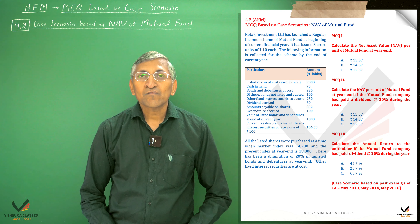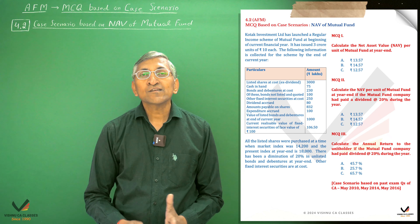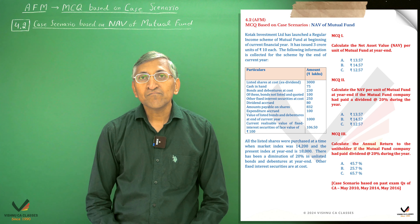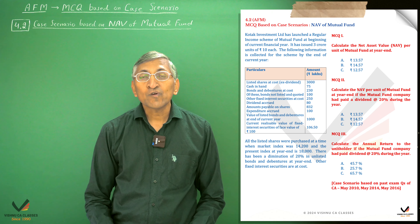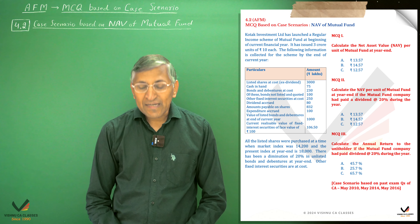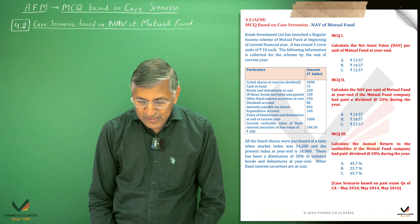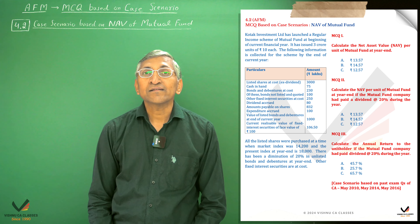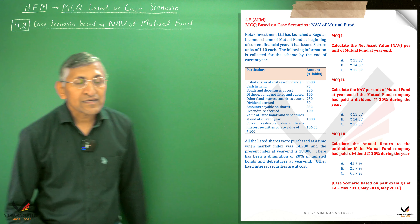NAV is the net asset value of the mutual fund company available for unit holders, divided by the number of units of mutual fund. So let us start.